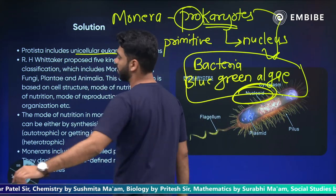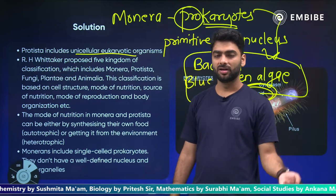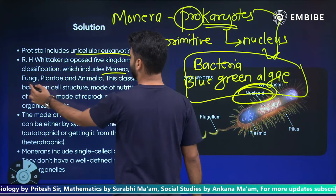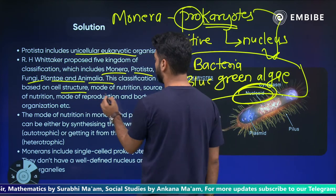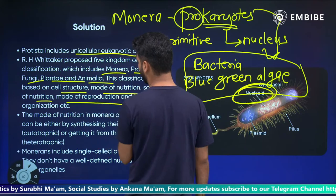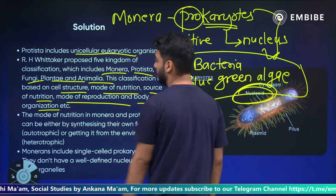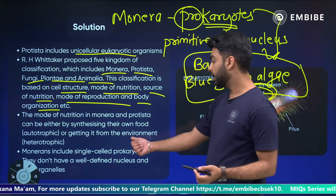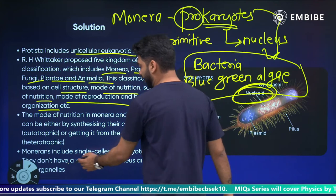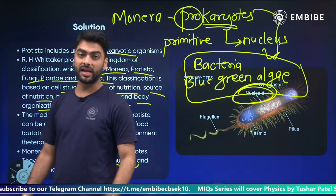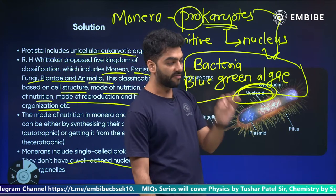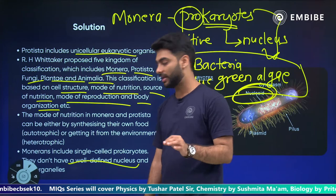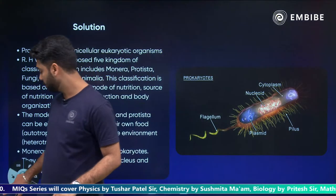Protista includes unicellular eukaryotic organisms like Amoeba, Paramecium, etc. R.H. Whittaker told us: Monera, Protista, Fungi, Plantae, Animalia — based on cell structure, mode of nutrition, source of nutrition, mode of reproduction, and body organization. Mode of nutrition in Monera and Protista can be autotrophic or heterotrophic. Monerans include single-cell prokaryotes — they don't have a well-defined nucleus and cell organelles. That is why 'Monerans have a well-defined nucleus' is the false or incorrect statement, making option D incorrect.